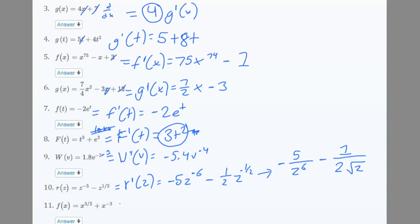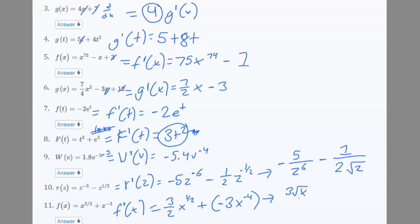Number 11: f'(x). x^(3/2) — take 3/2 to the front and subtract 1, giving exponent 1/2. Then plus (−3)x^(−4). Rewriting: (3√x)/2 − 3/x^4.